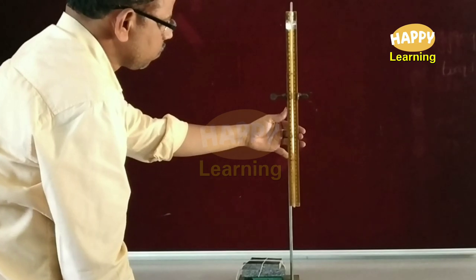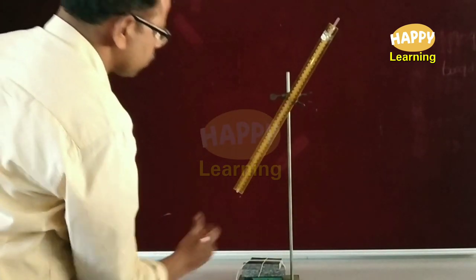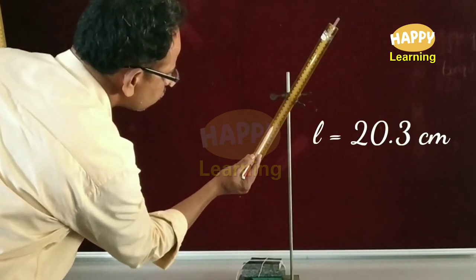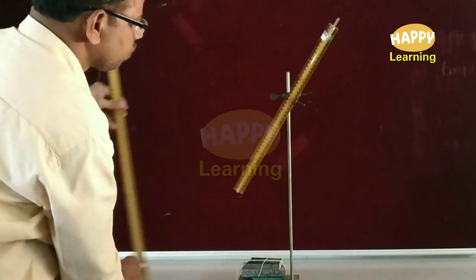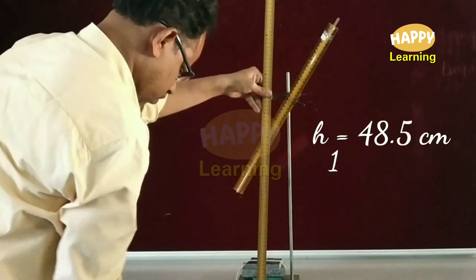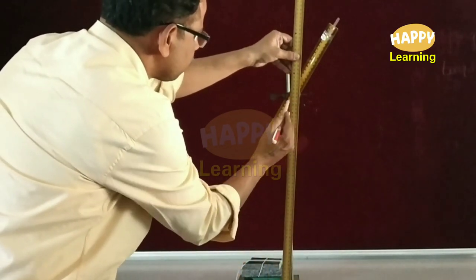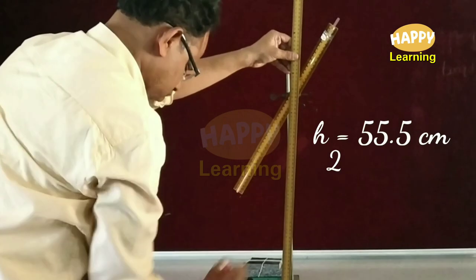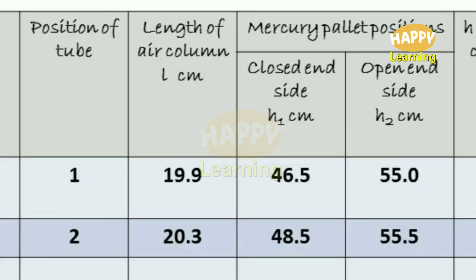Now the position of the quill tube is slightly changed, rotated as shown here. The length of the air column is noted as L, and the height of the mercury pellet end towards the closed end side is noted as h1, and towards the open end side, the height of the mercury pellet from the experimental table is noted as h2. The values of L, h1, and h2 are noted in the table.